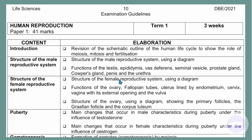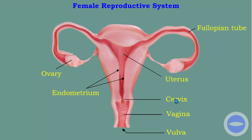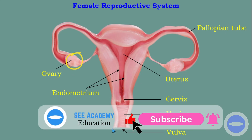Let's start with the structure of the female reproductive system. We have ovaries — ovaries are on both sides, one ovary on each side. They are found on each side of the uterus.